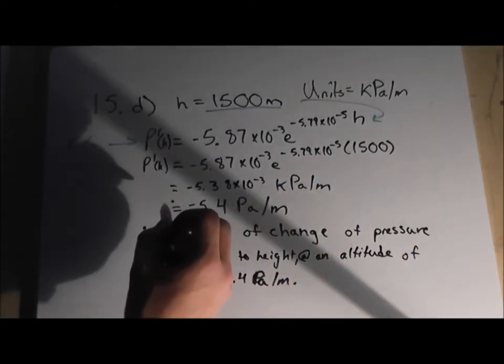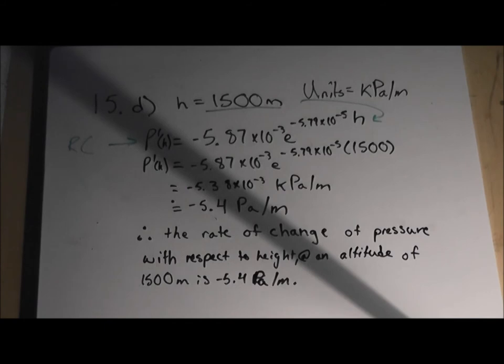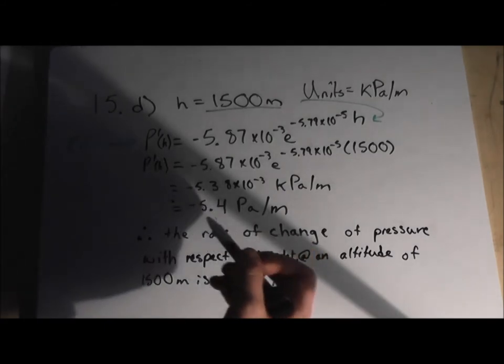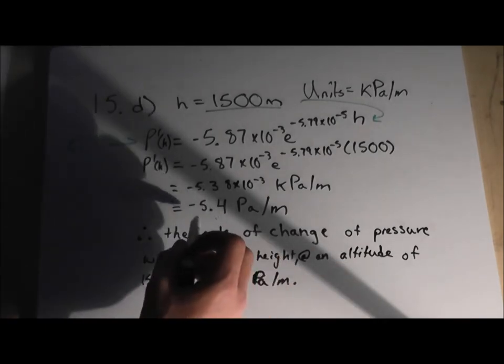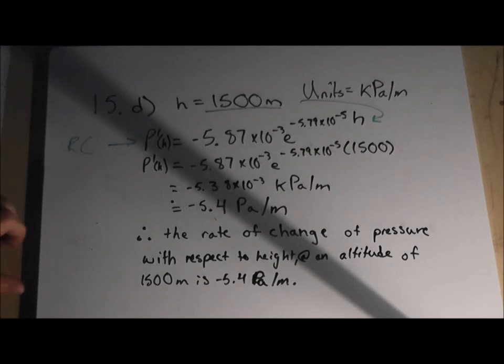And we find a rate of change of negative 5.38 times 10 to the negative 3 kilopascals. But we're going to switch that into pascals per meter, and that's going to be 5.4 pascals per meter. Therefore the rate of change of pressure with respect to height at an altitude of 1500 meters is negative 5.4 kilopascals per meter.